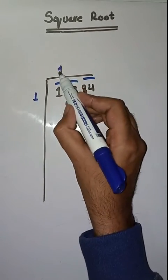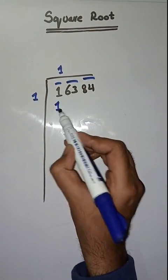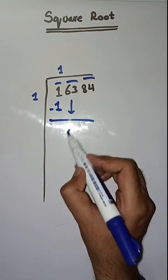One ones are one. One minus one, we get zero. Next pair is 63, we bring it down.